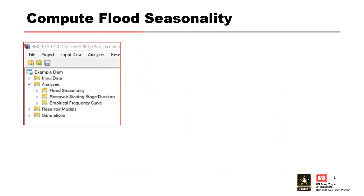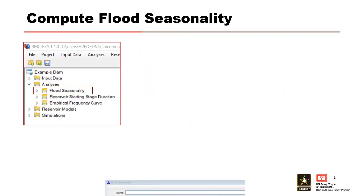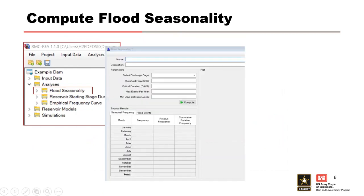Now I'm going to show you how to compute a new seasonality analysis using the RFA software. First, I'll open a new flood seasonality window by right-clicking within the project explorer or by selecting Analysis in the file menu and selecting New Seasonality Analysis. The empty flood seasonality window opens, and I'm going to enter a name and a description. The parameter window requires several inputs — first, we must select a discharge gauge from the drop-down menu. Only gauges you've added will appear in the drop-down menu.